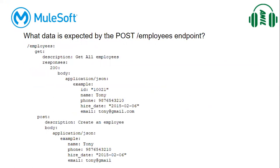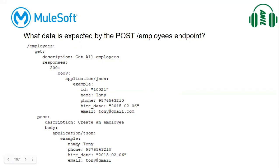The next question asks: what data is expected by the POST employee endpoint — what is the expected payload to post an employee? Looking at the RAML, the description says 'create an employee', body is application/JSON, meaning it is expecting input in JSON format. The example fields are: name, phone, hire date, and email.